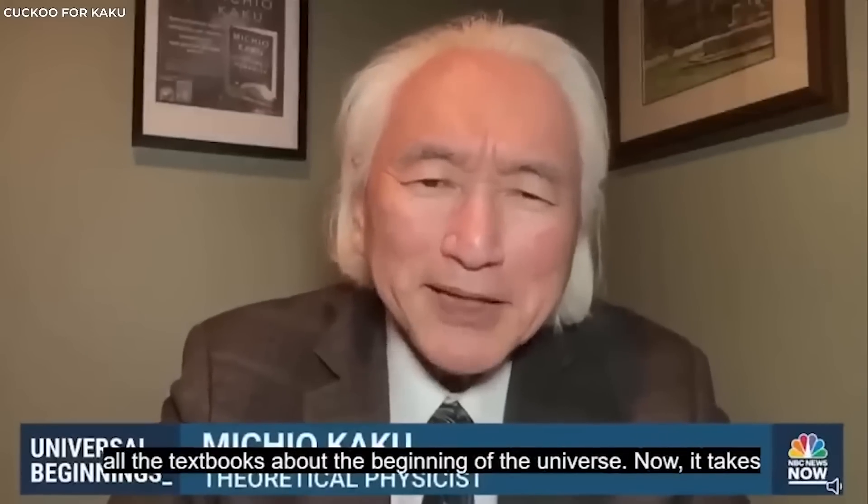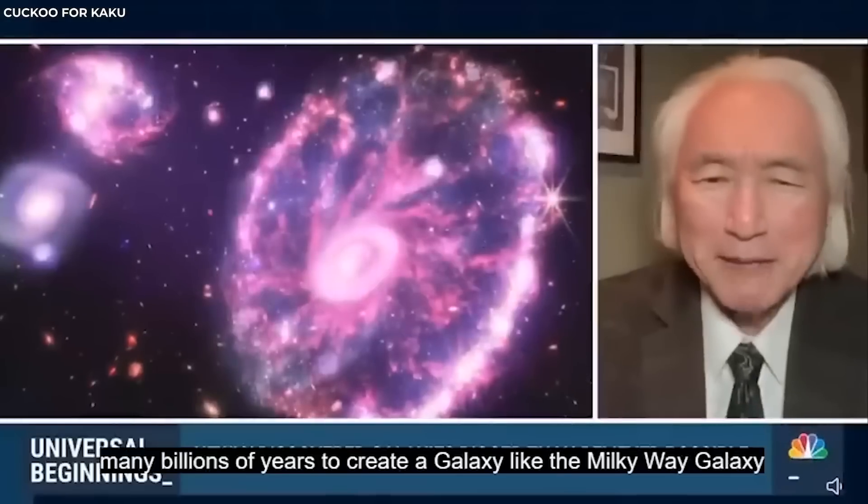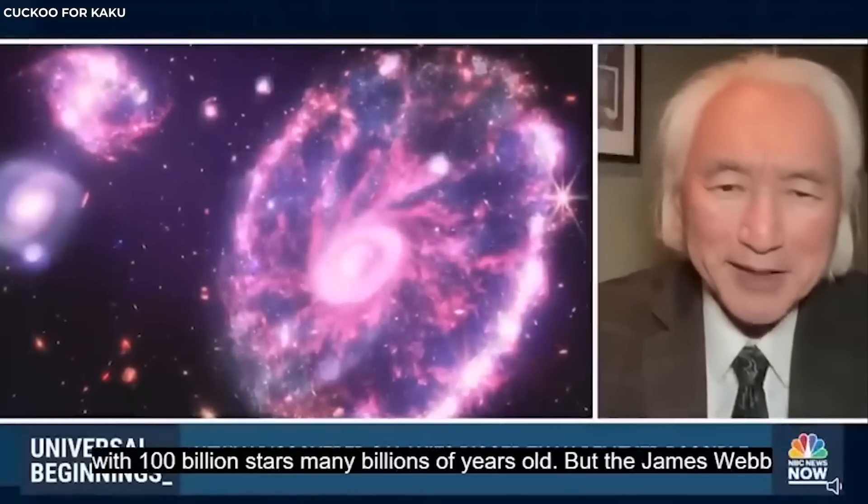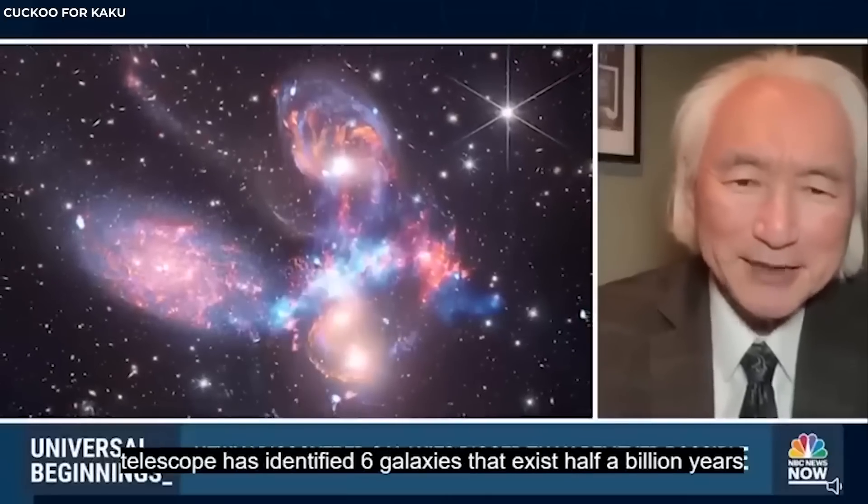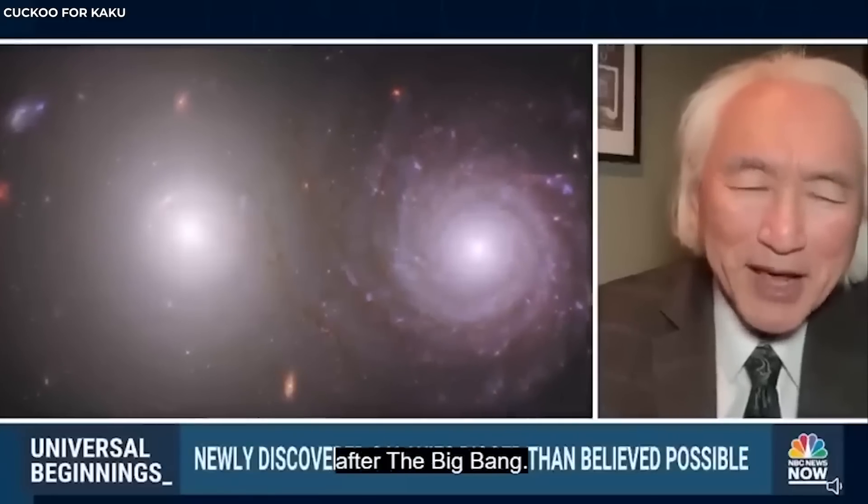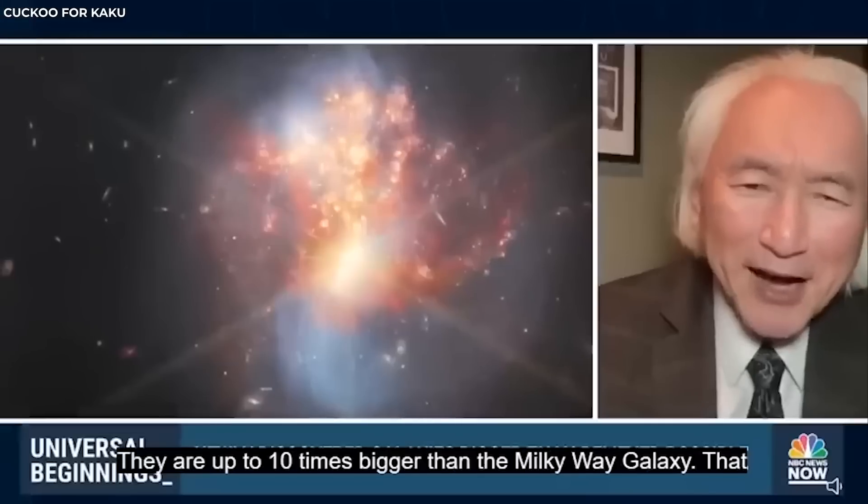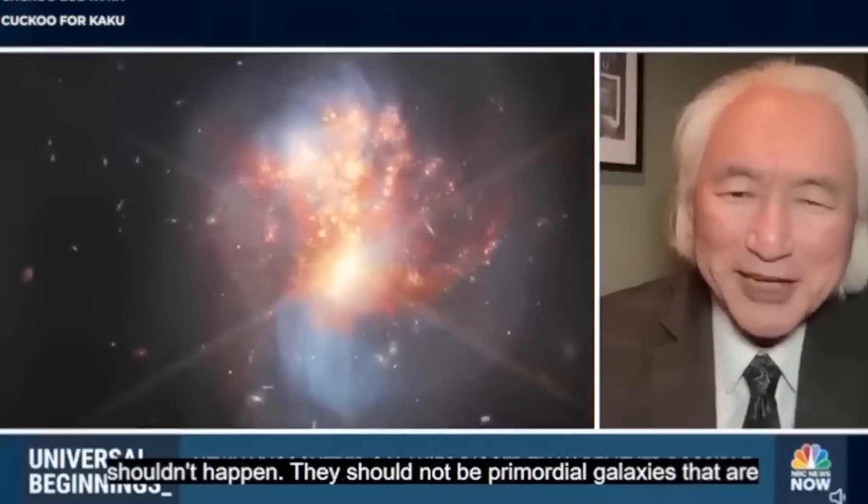It takes many billions of years to create a galaxy like the Milky Way galaxy with 100 billion stars, many billions of years old. But the James Webb Telescope has identified six galaxies that exist half a billion years after the Big Bang that are up to ten times bigger than the Milky Way galaxy.